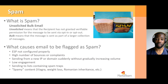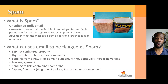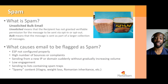Email can be flagged as spam for various reasons, including an improperly configured email service provider, a high number of bounces or complaints, sending from a new IP or domain without gradually increasing volume to establish reputation — otherwise known as IP or domain warming — low engagement, sending to lists that contain spam traps, or containing content that is widely known to be included in spam emails.